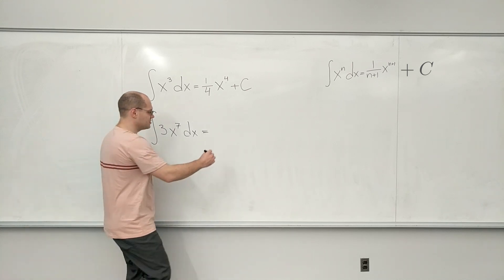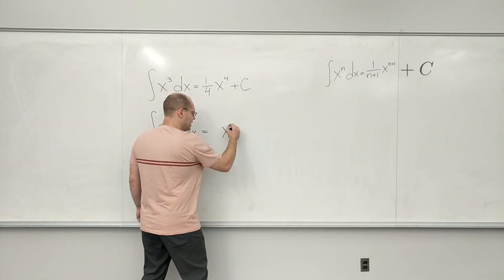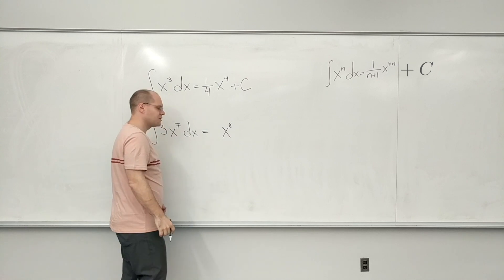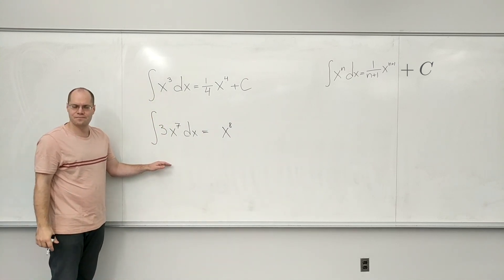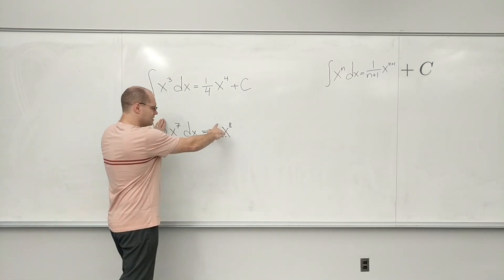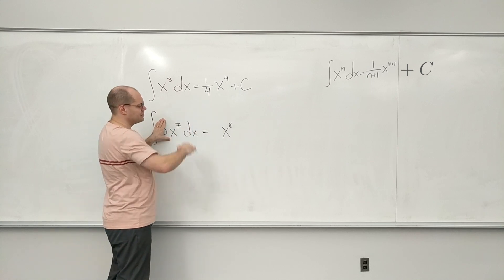well, it must have come from x to the 8th. I ignore the 3 for the time being, must have come from x to the 8th. And then I'm still not thinking about the 3, I'm just repeating the logic I just used.